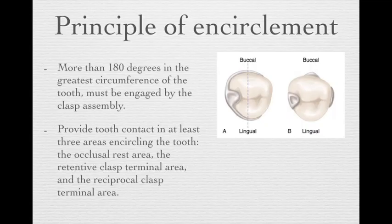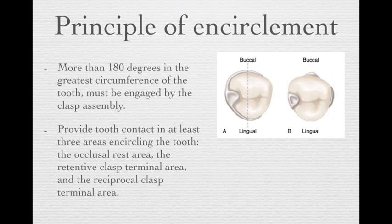The Clasp Design Principle. When we design a clasp, first we have to follow the principle of encirclement. The principle of encirclement means that more than 180 degrees of the greatest circumference of the tooth must be engaged by the clasp assembly. You should provide tooth contact in at least three different areas encircling the tooth: the occlusal rest, retentive clasp, and reciprocal clasp.